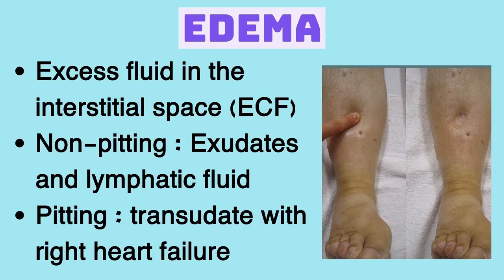Which one pits? Does increased vessel permeability with pus in the interstitial space pit? No. Would a transudate — say someone with right heart failure with swelling of the lower extremities — pit? Yes. So exudates don't pit; transudates do pit. How about lymphatic fluid? If you block the lymphatics and there's lymphatic fluid in your interstitial space, does that pit? Early on it does, but after a while no — so basically it's non-pitting. The three things that produce edema are transudates, exudates, and lymphedema. Only transudates produce pitting edema.